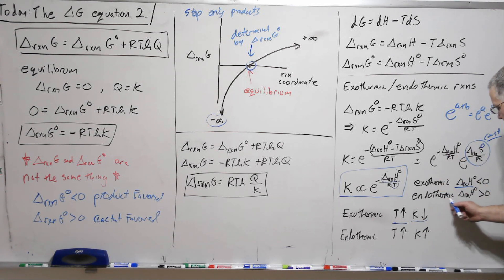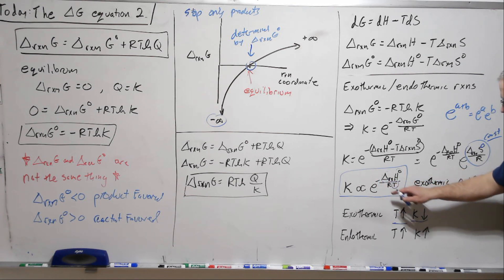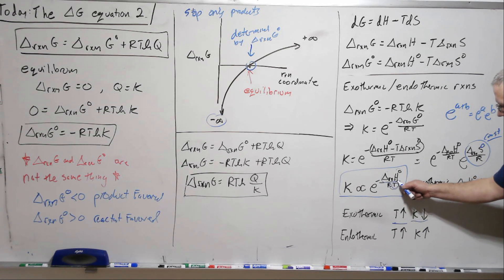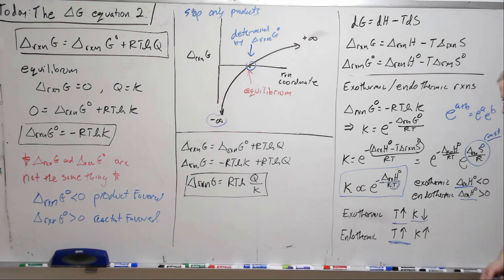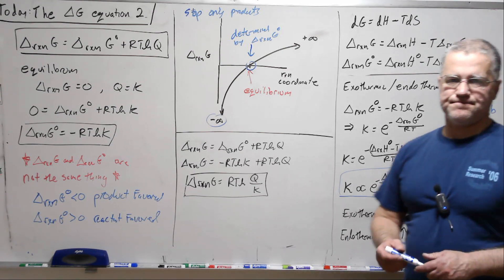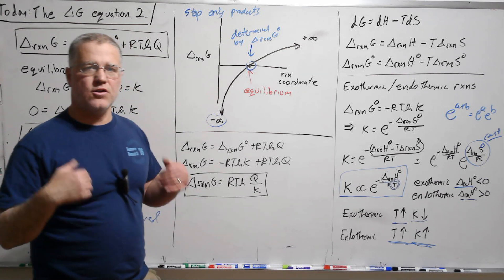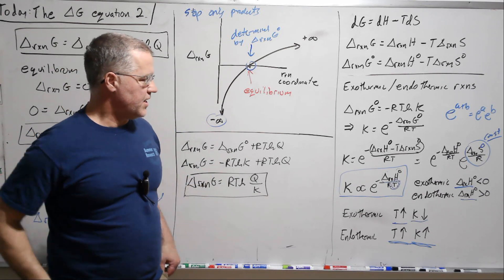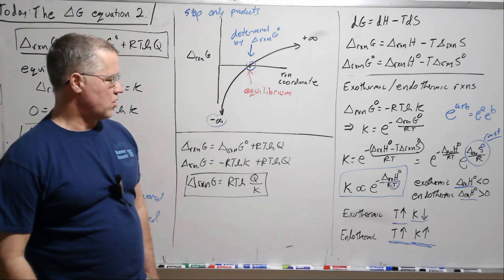For an endothermic reaction, this is positive. The negative is sitting out here. So if this is big, then if we take and divide, we're dividing by T, so we're going to minimize that. If we raise the temperature, we're going to raise the equilibrium constant. And so the equilibrium constant goes different directions depending on whether we're exothermic or endothermic and whether we add heat or remove heat.